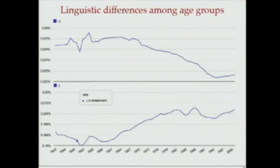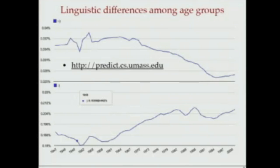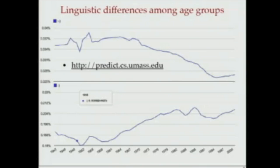We also built a tool using more than five million tweets over a two-month period to understand linguistic differences among different age groups. For example, we looked at two versions of the smiley face: one with a dash in the middle and a simpler one without a dash. It turns out the one with the dash is mainly used by older people, while the simpler one is used by younger Twitter users. So next time you're texting, watch your smiley faces — that might reveal your age a little bit. This tool is publicly available at predict.cs.umass.edu.